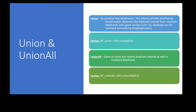But this is until Spark version 2.0.0. After Spark version 2.0.0, both are working similarly, which means union and union all both would retain the duplicate records. If we are expecting duplicate records by combining two data frames and we want to remove them, then we have to use another function called drop_duplicates.